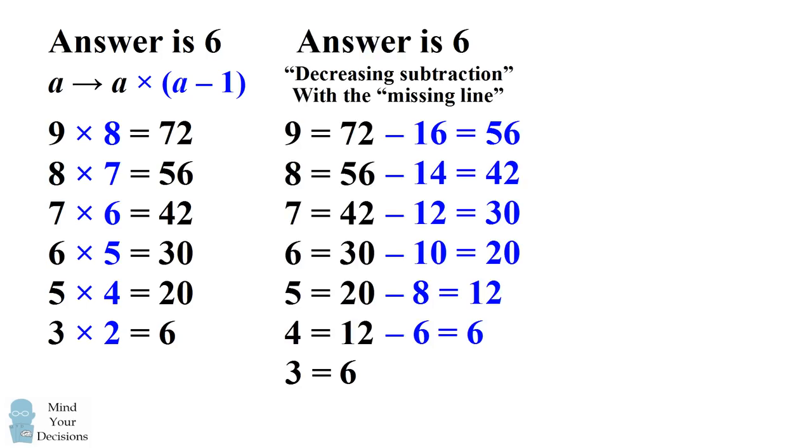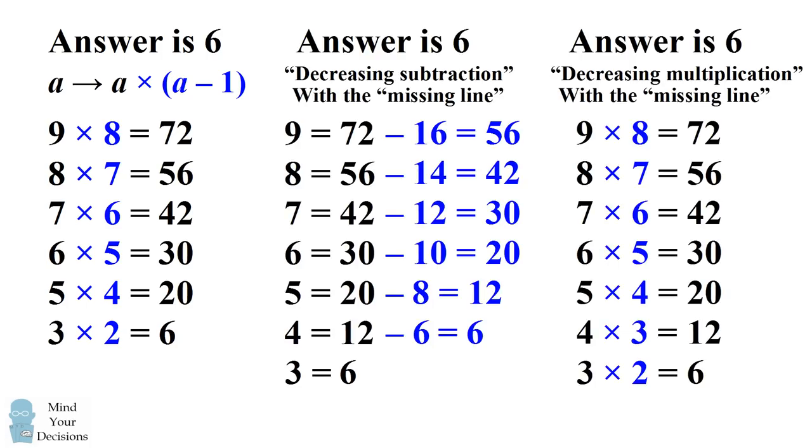So to recap it doesn't matter which method we're using we're always going to get to the answer that 3 equals 6 and in fact we would have 4 equals 12 in each of these methods too. So this logic would suggest that the correct answer to this puzzle is that 3 equals 6. What do you think?